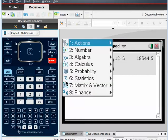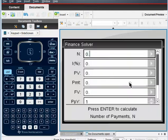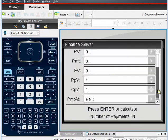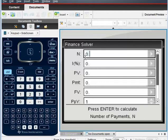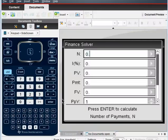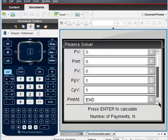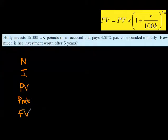So we go to menu, and then we go down to finance, and across, and it's the first one, financial solver. And you have these various cells which we need to enter in various figures. So first of all, you have N, I, and then it says PV, which obviously stands for present value, PMT, which stands for payment, FV, PPY, and CPY.